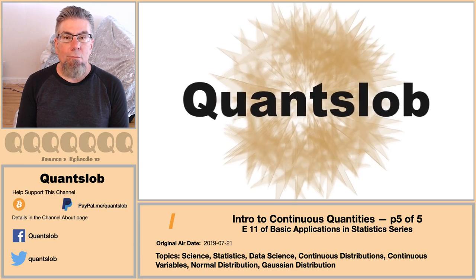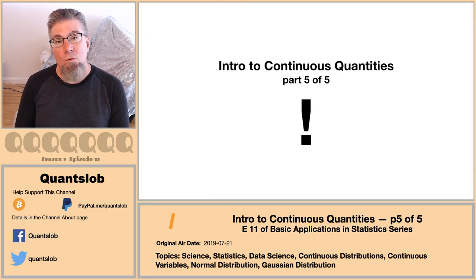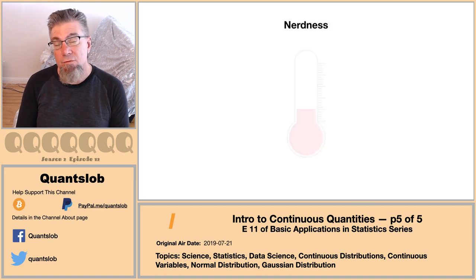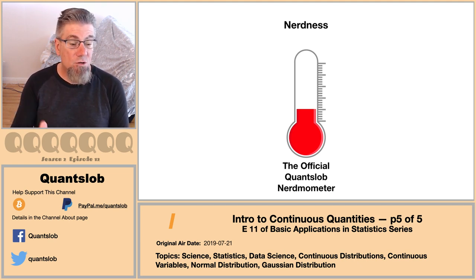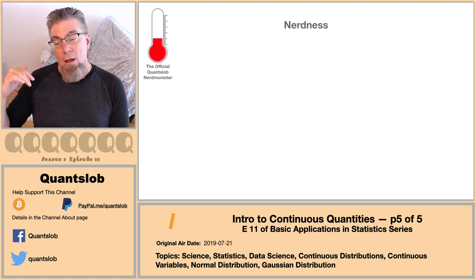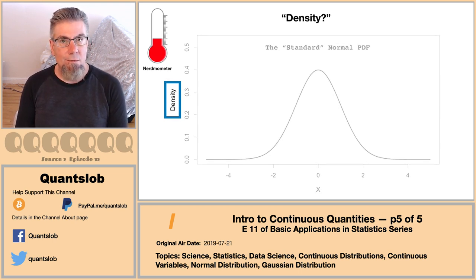Greetings and welcome to another installment of QuantSlob. This is 11 in our basic application series — and this time around we're going to close out our mini-series on continuous quantities. If you're a QuantSlob power user, you'll have noticed the capital I in the title section — I stands for intermediate. This is the first QuantSlob installment classified as intermediate. To close out our discussion on continuous quantities, we're going to ramp up to some pretty geeky stuff, so we're breaking out the official QuantSlob nerdmometer.